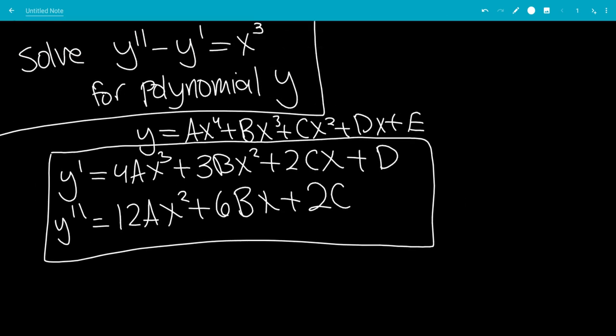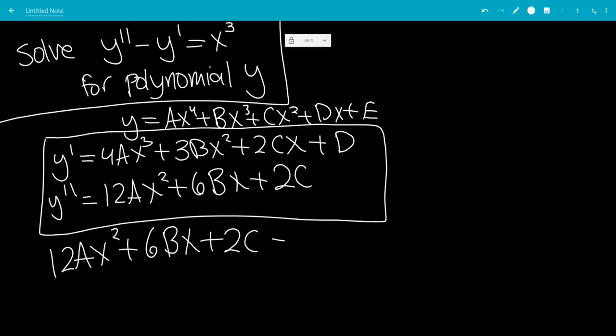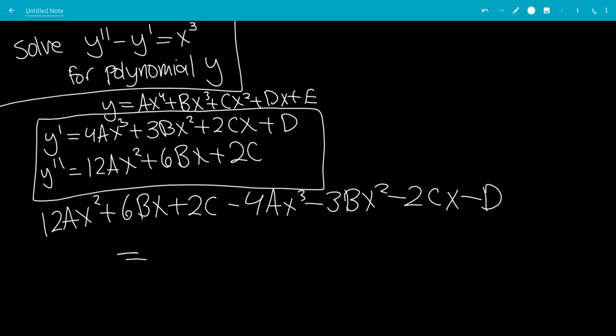So let's substitute y double prime, so this is 12ax squared plus 6bx plus 2c. So minus y prime, so that would be, make the negative sign for every term, so that would be minus 4ax cubed minus 3bx squared minus 2cx minus d. Okay, and that's equal to x cubed.